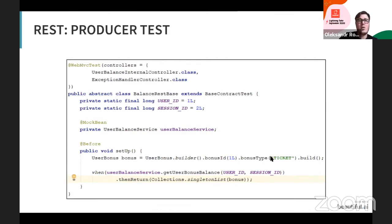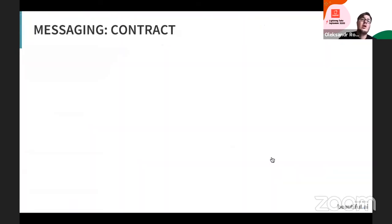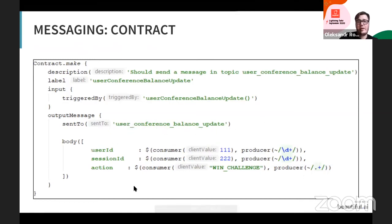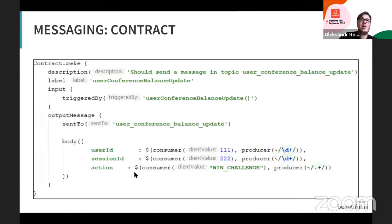We can do this not only for REST communication. We can also define contracts for messaging. For example, when a service publishes a message to a topic — like Apache Kafka — we define which topic the message is sent to and the content of the message itself. Then we verify both on the side publishing the message and on the side consuming it from the topic.